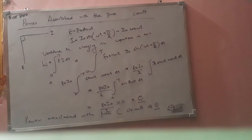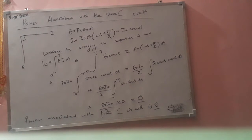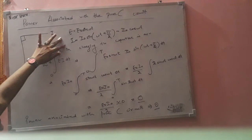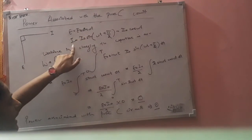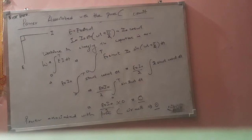Now in the case of a pure C circuit, for a capacitor, the current leads the EMF by 90 degrees. So the expressions for E and I are: E is equal to E-naught·sine(omega-t), and I is equal to I-naught·sine(omega-t + 90), which is equal to I-naught·cos(omega-t).